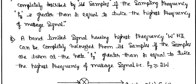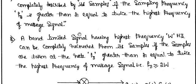Now we need to understand why the sampling frequency should be set at a rate greater than or equal to two times the highest message signal frequency, and what happens if it is less than that. These criteria are given by Nyquist.